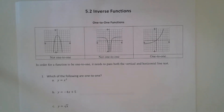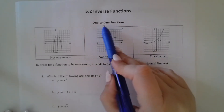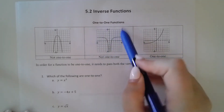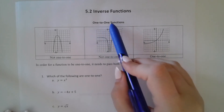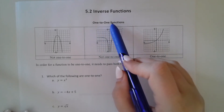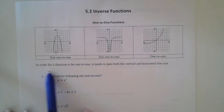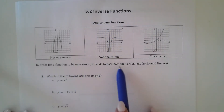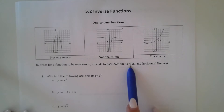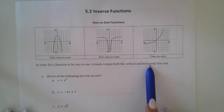Now we're going to talk about 5.2, which is inverse functions. Before we jump into inverse functions, we're going to talk about one-to-one functions. A one-to-one function means that it needs to pass both the vertical and the horizontal line test.